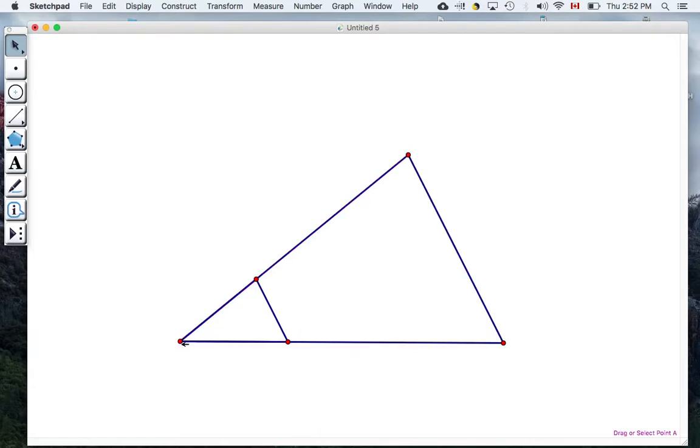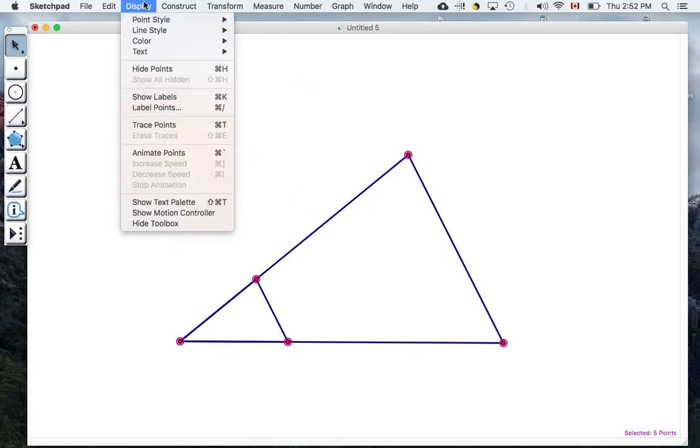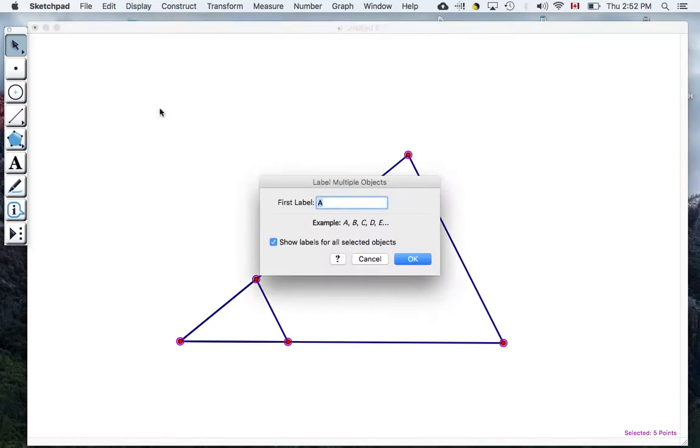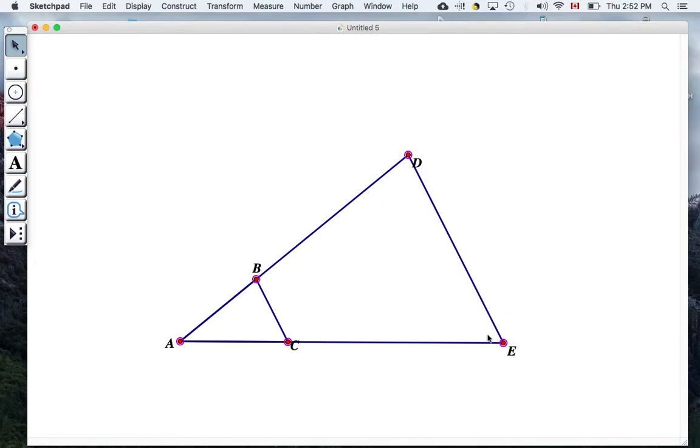Next what I want to do is I want to label up these points. So this was A, B, C, D, E. And with all the points selected you go up to display, label points, we want it to start at A, we hit OK, and we have A, B, C, D, E.